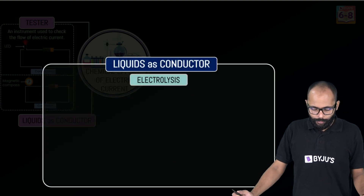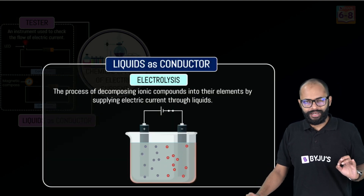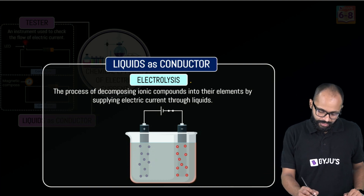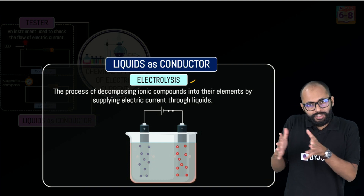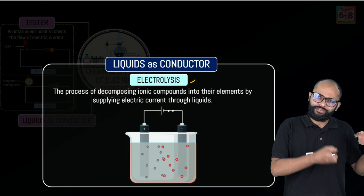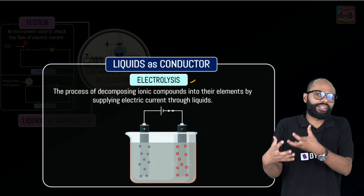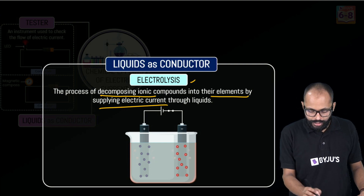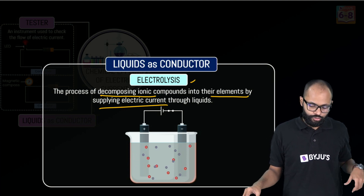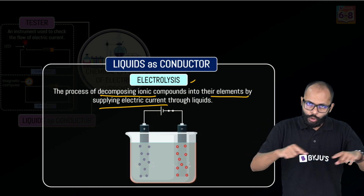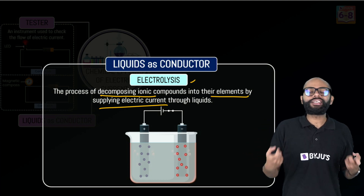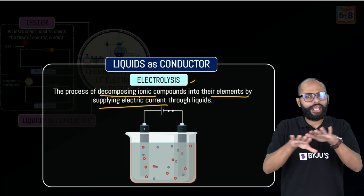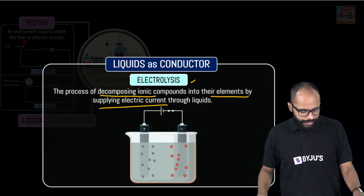Based on this concept of conduction in liquids, we have one important method: electrolysis. Lysis means breaking or separation; electro means electricity. So electrolysis is the process of decomposing ionic compounds into their elements by supplying electric current through liquids. The ionic compounds are separated into their individual constituent elements — that is electrolysis.